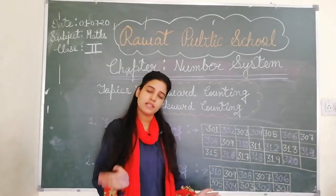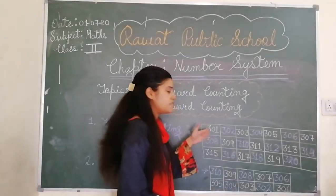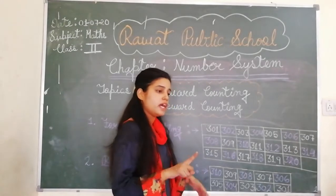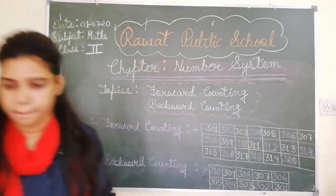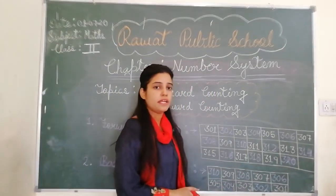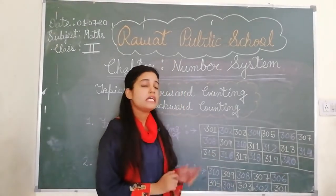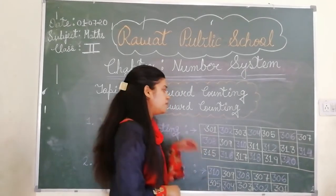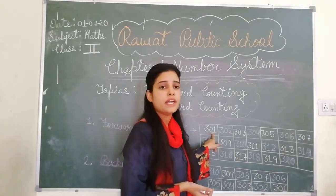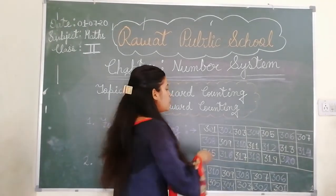आपको 1 to 100 counting आती है, तो उसी से आपको up to 1000 counting लिख सकते हैं। तो firstly हम start करेंगे 301 से। आपको हमेशा ध्यान रखना है — जो भी 100 वाली counting होती है, उसमें हम 3 digits का use करते हैं। अगर आपने 0 का use नहीं किया, जैसे 300 के बाद लिखते वक्त 0 नहीं लिखा, तो 301 की जगह 31 हो जाएगा।